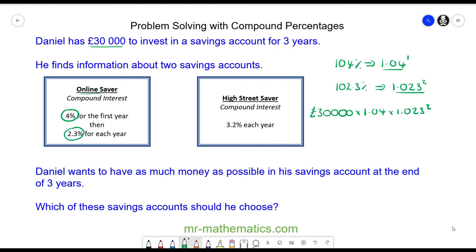With the online saver we get £32,651.70 over the three years. Now we're going to compare this to the high street saver.